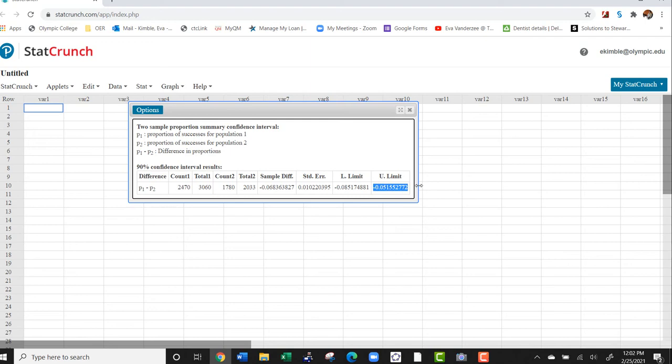So for our example, our lower limit for a confidence interval at 90% is going to be between negative 0.085 and negative 0.051.